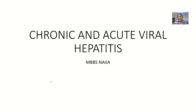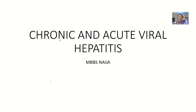We already spoke about chronic viral hepatitis, but under viral hepatitis, I forgot to put the types. The types based on cause are hepatitis A, B, C, D, E, and F. The type based on duration — like how long it has been there — is where we have chronic and acute.